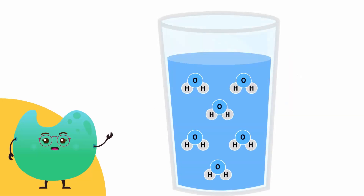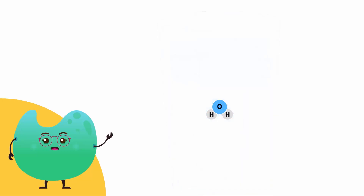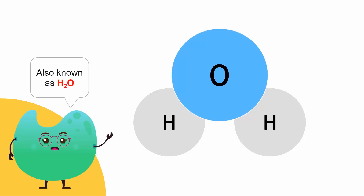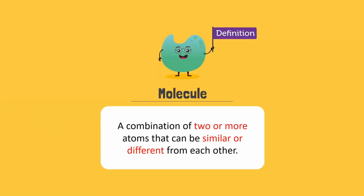Another example is water. Water is made up of water molecules. One water molecule is made up of two hydrogen atoms and one oxygen atom — also known as H2O. We define molecules as a combination of two or more atoms that can be similar or different from each other.